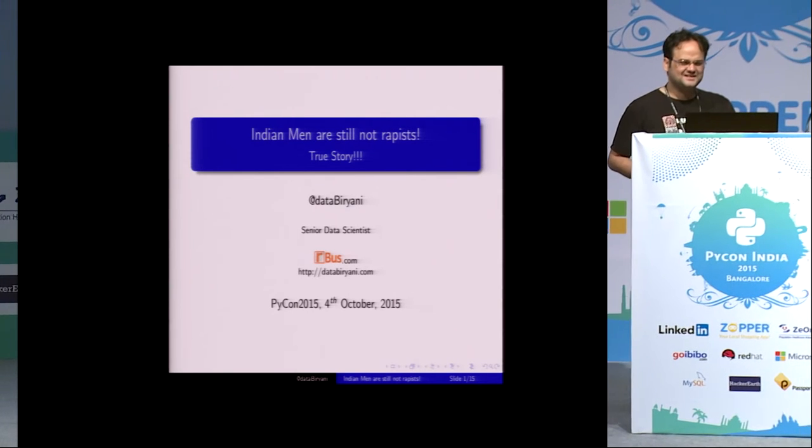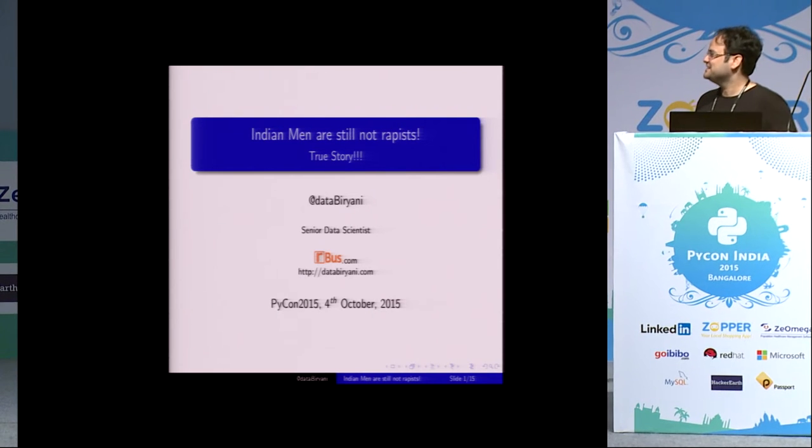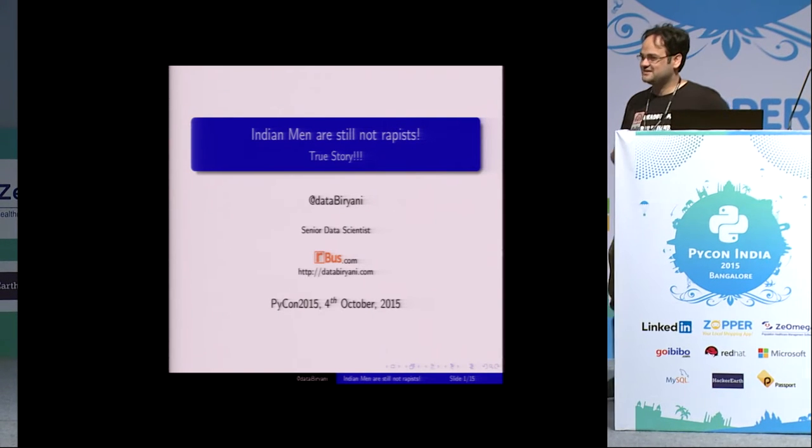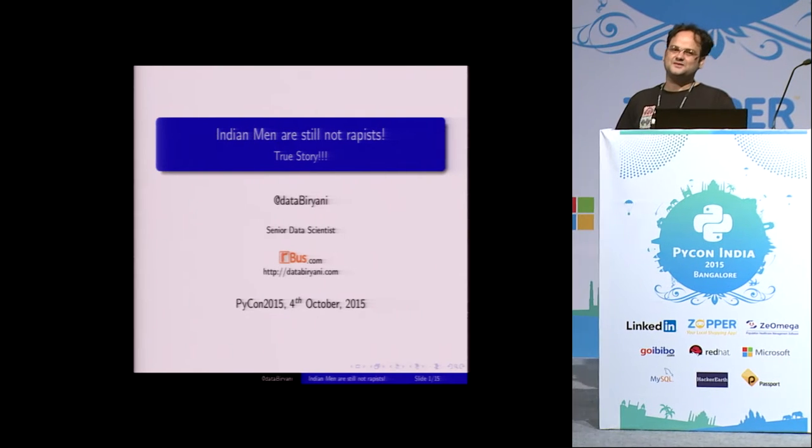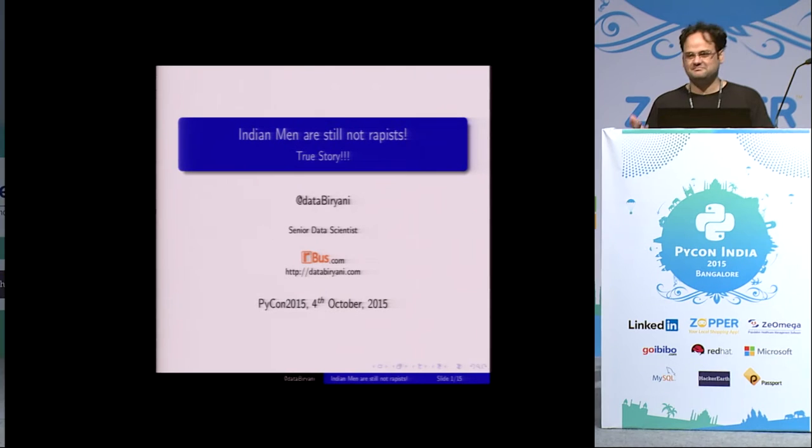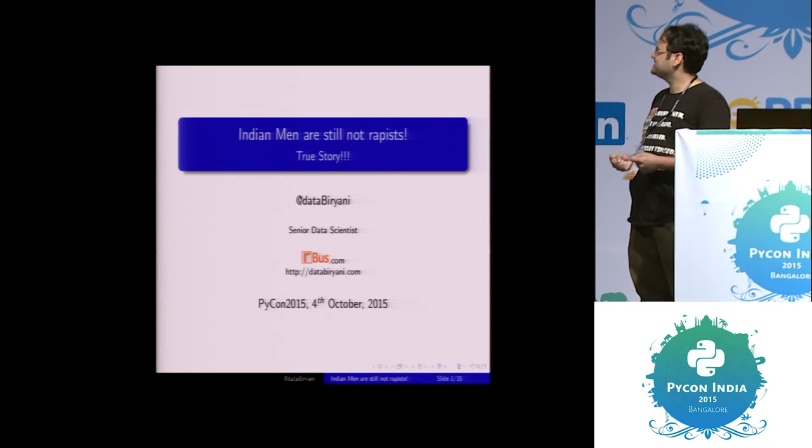And I had written earlier this year a post called Indian men are not rapists. If you would remember, there was the whole episode that happened. So I wanted to reproduce those graphs using bokeh and ggplot, both of which implement grammar of graphics in Python. And I wanted to see what the aesthetics are like.